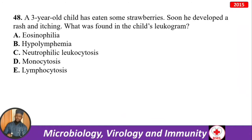A three-year-old child ate strawberries and soon developed rash and itching — an allergic reaction. What is found in the child's leukogram? For allergies, remember the names start with E: eosinophils and IgE. Eosinophilia is also found in helminth infections, where eosinophils play an important role in eradicating helminths.